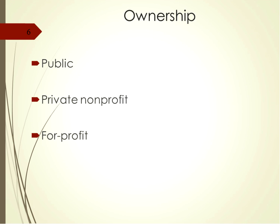Public healthcare organizations include tax-supported agencies at the national, state, and local level. The boards of these institutions are appointed through political processes and are responsible to elected officials and taxpayers. Private nonprofit institutions are controlled by voluntary boards and often have a mix of paying and charity patients. The excess of income over expenses is redirected into the organization to further its mission.